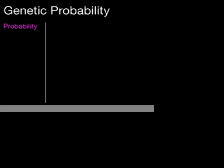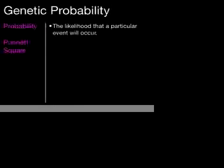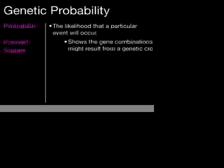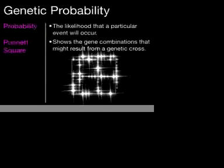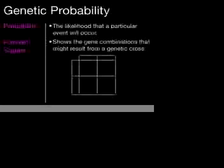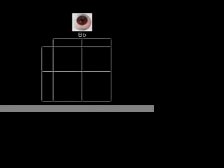Determining what traits will be passed on is a matter of probability. Probability is the likelihood that an event will occur, and biologists use probability along with a device called a Punnett square to determine what gene combinations might result from a genetic cross. A Punnett square is a shape that looks a little something like this. Because biological organisms take a long time to grow, Punnett squares come in handy because they allow us to predict traits before or instead of actually growing them.